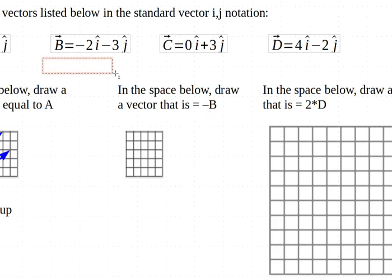First, we're going to come up here and, like we did before, look at our equation. Minus 2i hat means we're going 2 to the left, and minus 3j hat means we're going 3 down.